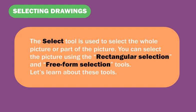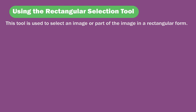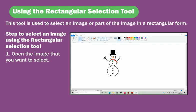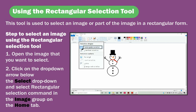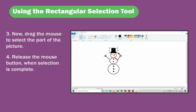The Select tool is used to select the whole picture or part of the picture. You can select the picture using the rectangular selection and free-form selection tools. The rectangular selection tool is used to select an image or part of the image in a rectangular form. To use it: open the image, click on the drop-down arrow below the Select button and select the rectangular selection command in the image group on the home tab, then drag the mouse to select the part of the picture, and release the mouse button when the selection is complete.